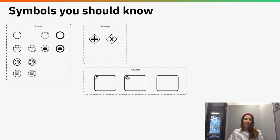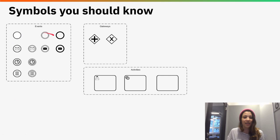This is an advanced tutorial, so you should know some BPMN already. In particular, you should know the symbols shown on the slide — what kinds of events we have and what different types exist. You should know about the start event, the intermediate event, and the end event, and the types: message, timer, and conditional event.